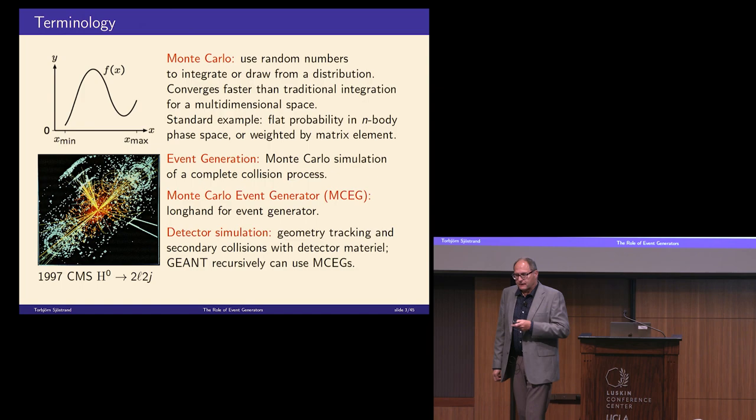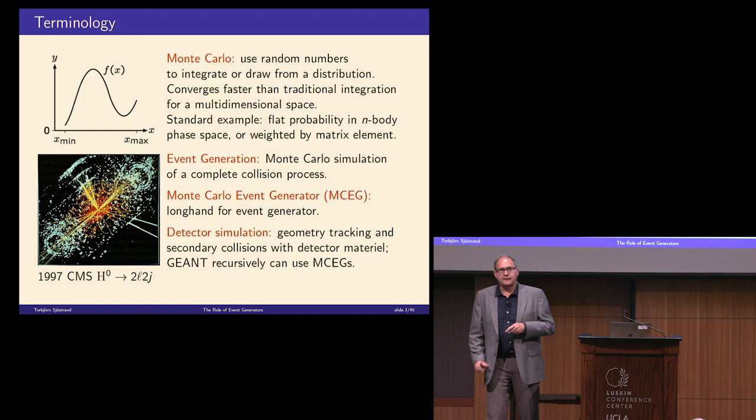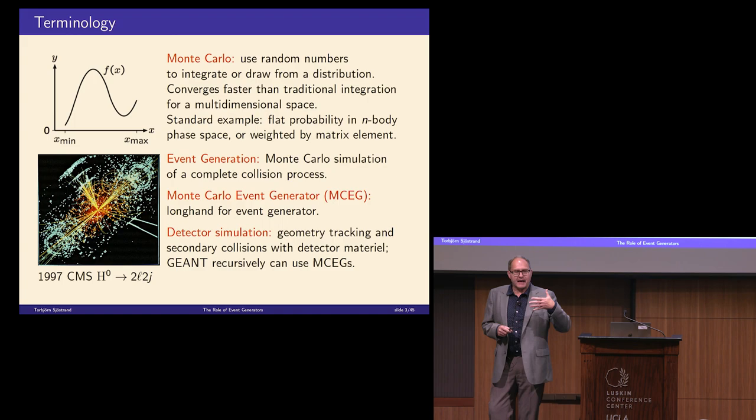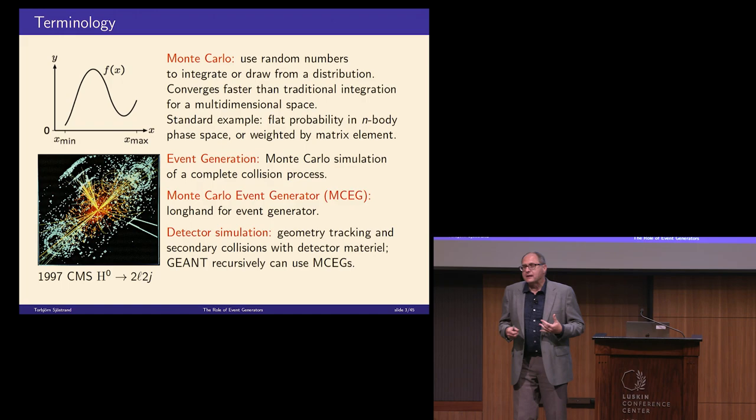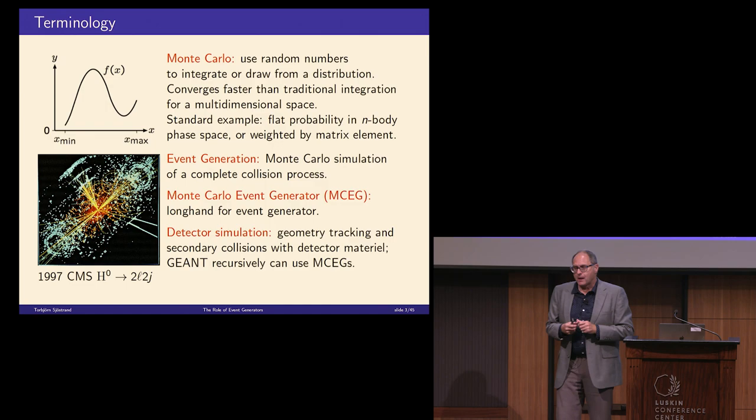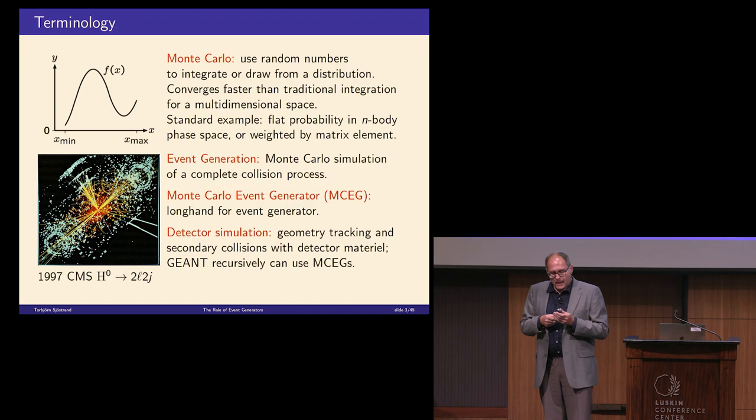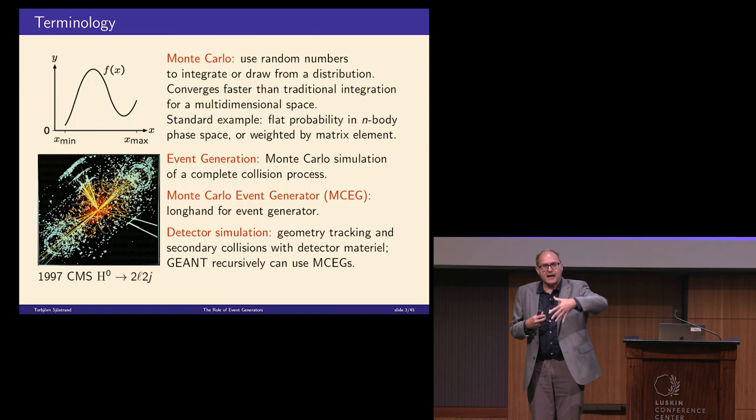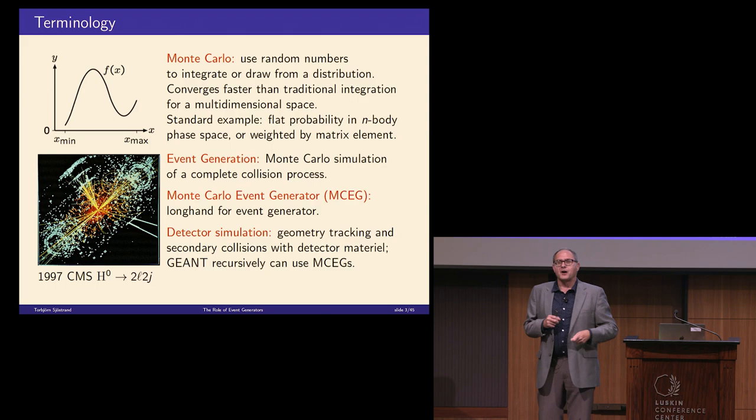When I speak about Monte Carlo, I mean that you use random numbers to either draw from a distribution or integrate a distribution, often both at the same time. An event generator is really a collection of different recipes for different steps of the evolution from a hard interaction to a complete final state with hundreds of different particles. Very often you want to complement that by a detector simulation program, and sometimes you can reuse your hard process generator to deal with interactions inside detector material.